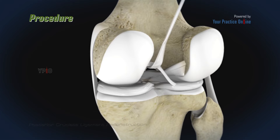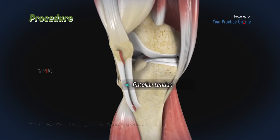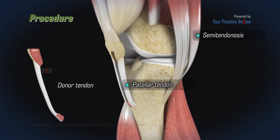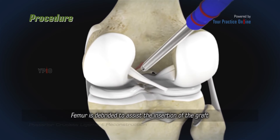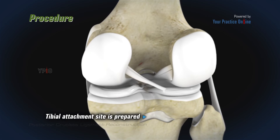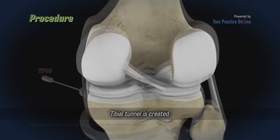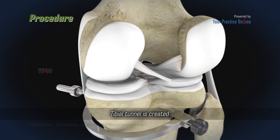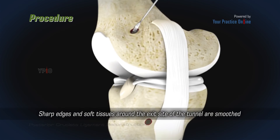Care is taken to preserve the ligament of Risberg if it is intact. The donor tendon is harvested from the patellar tendon, or the semitendinosus and gracilis tendon. The soft tissue around the femur is debrided to assist the insertion of the graft. The tibial attachment site is also prepared by identifying the normal attachment of the PCL at the bottom of the PCL facet. A tibial tunnel is then created to the anatomic insertion of the PCL on the tibia.